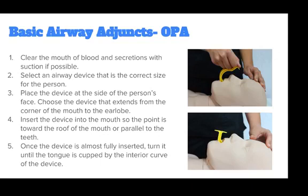To insert an OPA, clear the mouth of blood and secretions with suction if possible. Select an airway device that is the correct size for the person. Too large an airway can damage the throat, whereas too small a device compresses the tongue into the airway. Place the device at the side of the person's face and choose the device that extends from the corner of the mouth to the earlobe. Insert the device into the mouth so the point is towards the roof of the mouth or parallel to the teeth. Do not press the tongue back into the throat. Once the device is almost fully inserted, turn it until the tongue is cupped by the interior curve of the device.